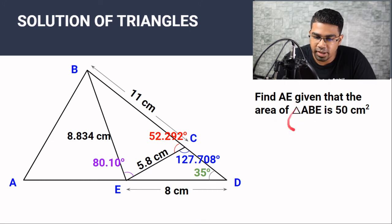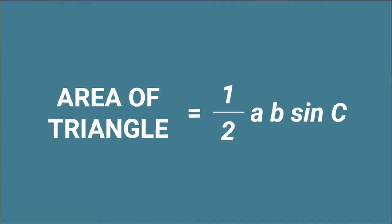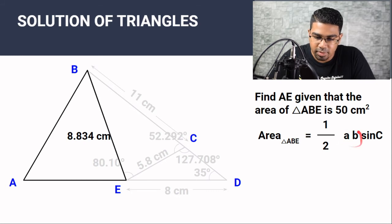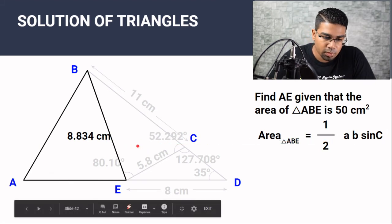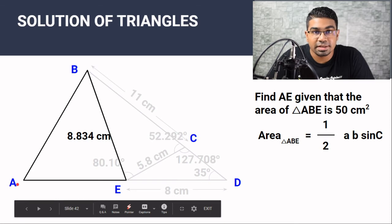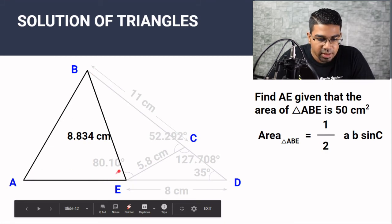Find AE given that the area of triangle ABE is 50 cm². We're going to use the area formula: area = ½ × a × b × sin C. Notice that angle C in the formula must be opposite to the side not used in the formula. We are using sides AE and BE, so angle C is opposite the unused side. We need to identify which angle of triangle ABE to use — that is angle AEB. We need to find this angle before we can apply the formula.